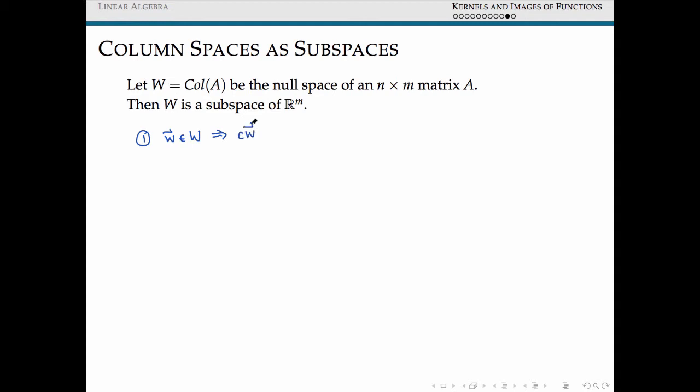Similarly, given any pair of vectors W1 and W2 inside our column space, we'd like to show that the sum of these vectors is also inside our column space. So respectively, these are closure under multiplication by scalars and closure under sum of vectors. So remember, these are the two properties that define subspaces in general. So let's show that for column spaces.